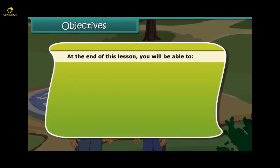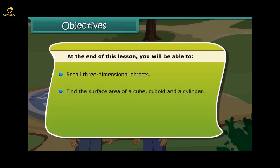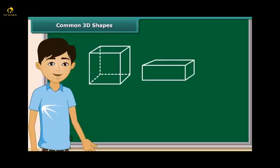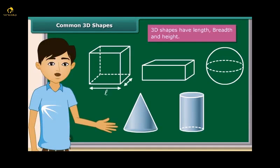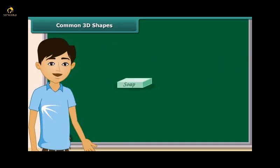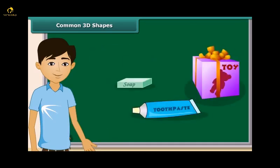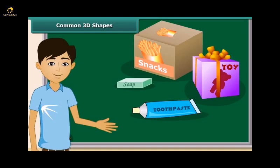Objectives. At the end of this lesson, you will be able to: recall 3D objects; find the surface area of a cube, cuboid, and a cylinder; and learn about the volume of solids such as cube, cuboid, and cylinder. Can you recall these shapes? Yes, these are 3D because they have length, breadth, and height. Soaps, toys, pastes, snacks, etc. often come in the packing of cuboidal, cubical, or cylindrical boxes. Let us learn about their surface area and their volume.